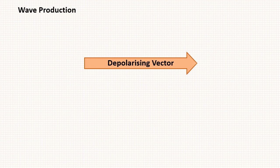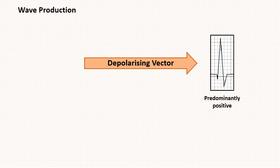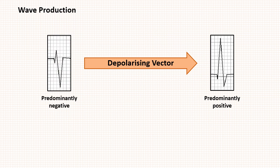Before actually determining axis of an ECG, you need to know some basic concepts regarding heart vectors and wave production. If the direction of depolarizing current or vector is in the same direction of the lead, it will produce a positive wave. If the direction is opposite, it will produce a negative wave. And if the lead is perpendicular to the depolarizing vector, it will produce an equiphysic wave.